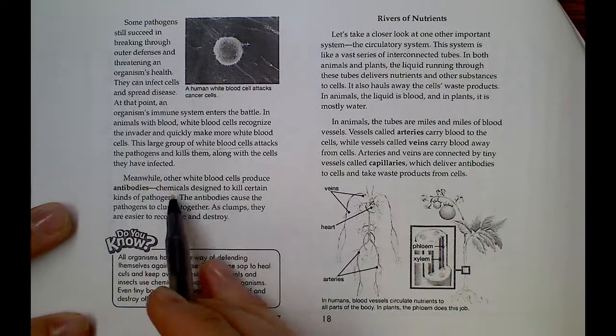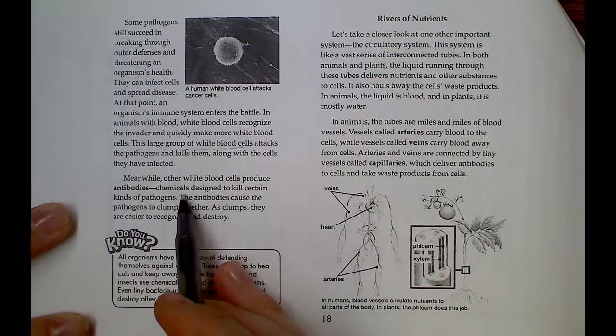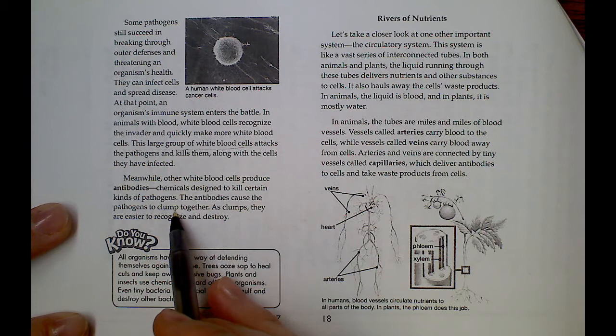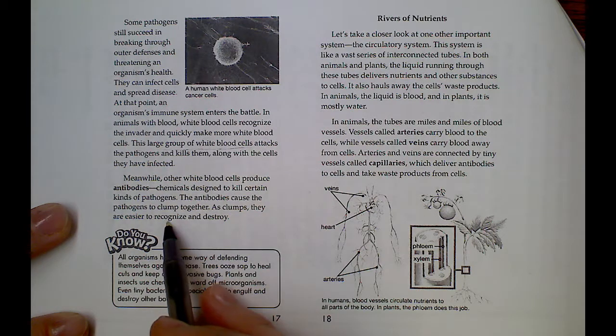Meanwhile, other white blood cells produce antibodies, chemicals designed to kill certain kinds of pathogens. The antibodies cause the pathogens to clump together. As clumps, they are easier to recognize and destroy.